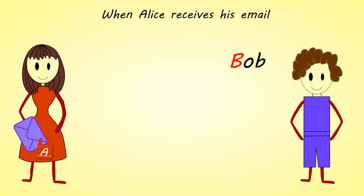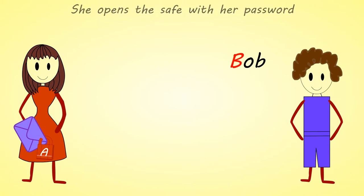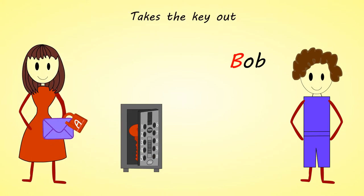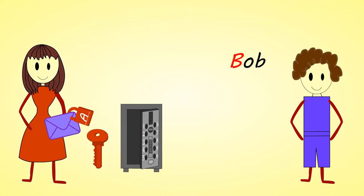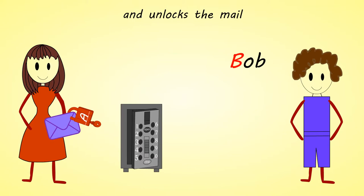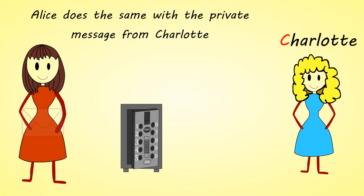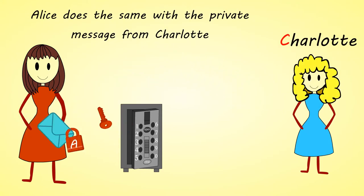When Alice receives his mail, she opens the safe with her password, takes the key out, and unlocks the mail. Alice does the same with the private message from Charlotte.